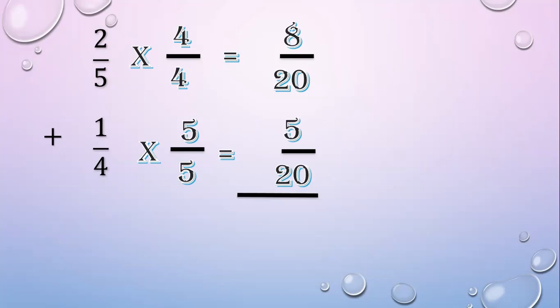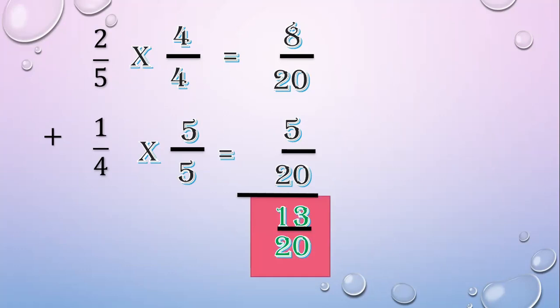Add the numerators: 8 plus 5 equals 13. Copy the denominator: 20. So the final answer is 13 over 20.